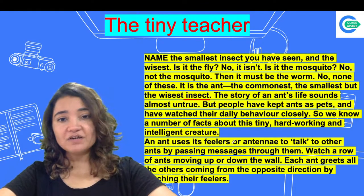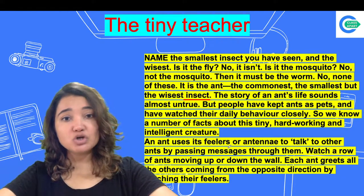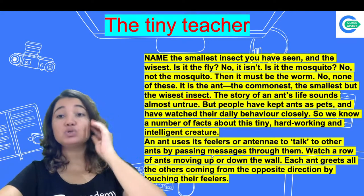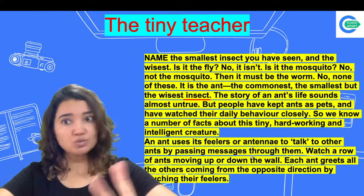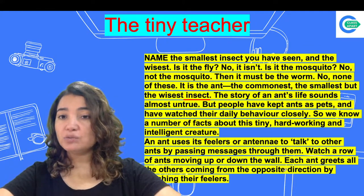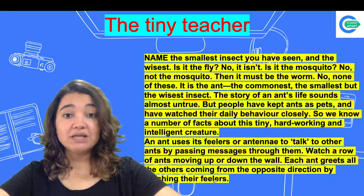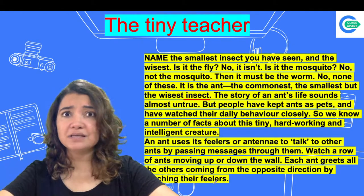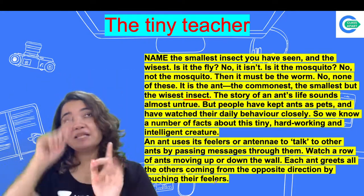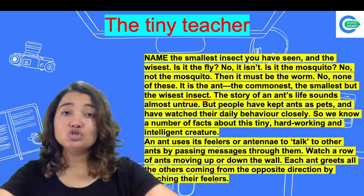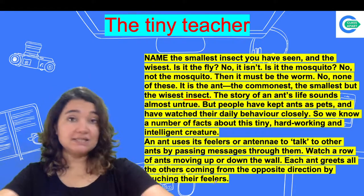An ant uses its feelers or antennae to talk to other ants by passing messages through them. Watch a row of ants moving up and down a wall — each ant greets all the others coming from the opposite direction by touching their feelers. Isn't that amazing? Every ant coming from the opposite direction greets and meets the other with their feelers.